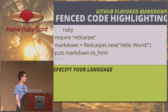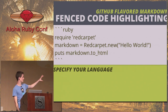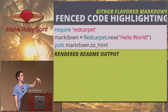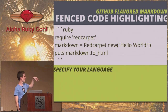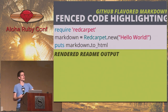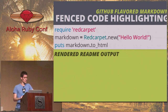Syntax highlighting in readmes — just do a triple backtick and then specify the language. So if you write triple backtick ruby, you'll get nice syntax highlighting in your readme. It makes things much more readable and more awesome.